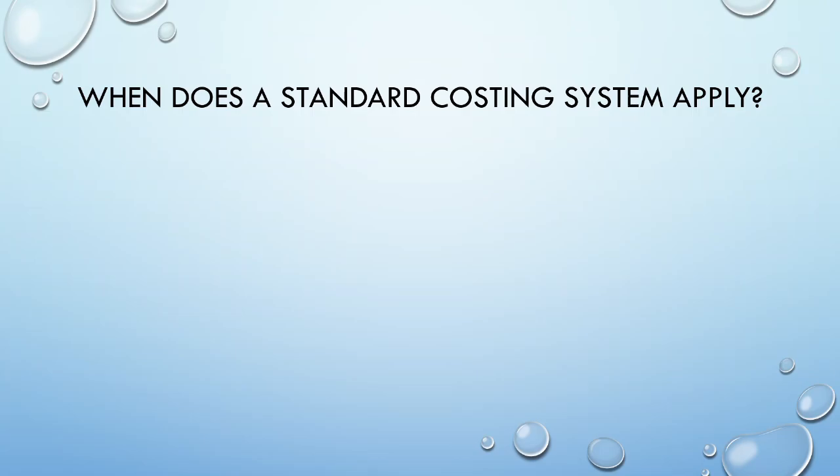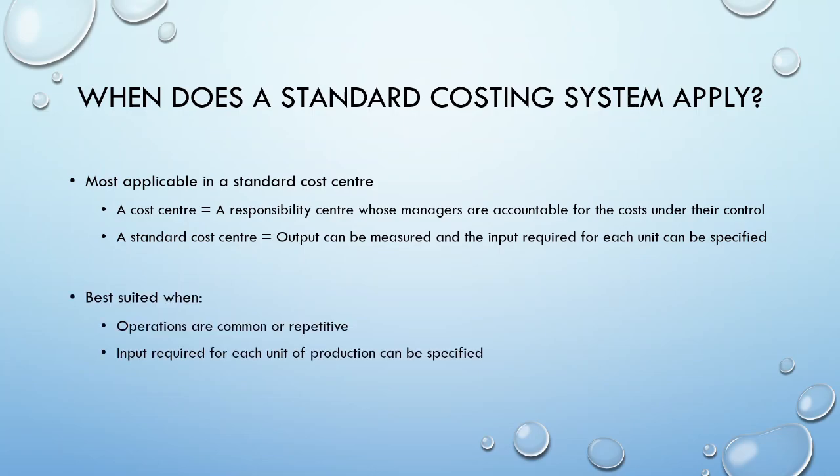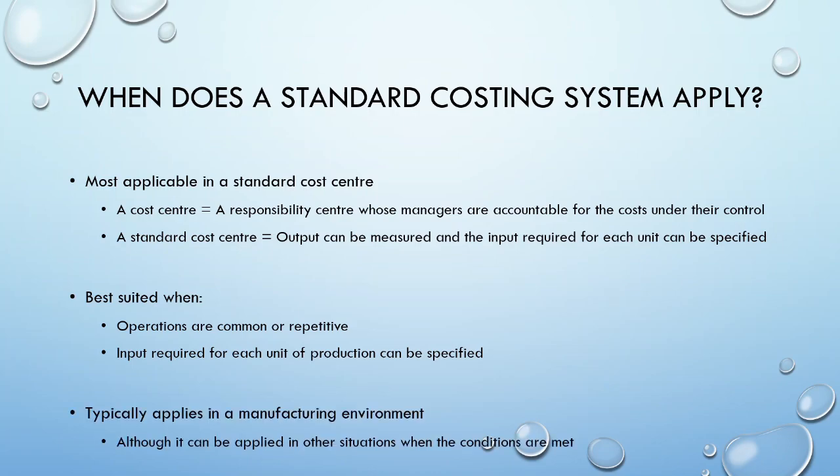A standard costing system would be useful in a standard cost center. A cost center is a responsibility center where managers are only accountable for costs directly under their control. A standard cost center is one where the output is measurable and the input required for each unit can be specified. Standard costing is best suited when inputs can be specified and operations are common or repetitive — conditions that typically occur in a manufacturing environment, though it can be extended when conditions are met.